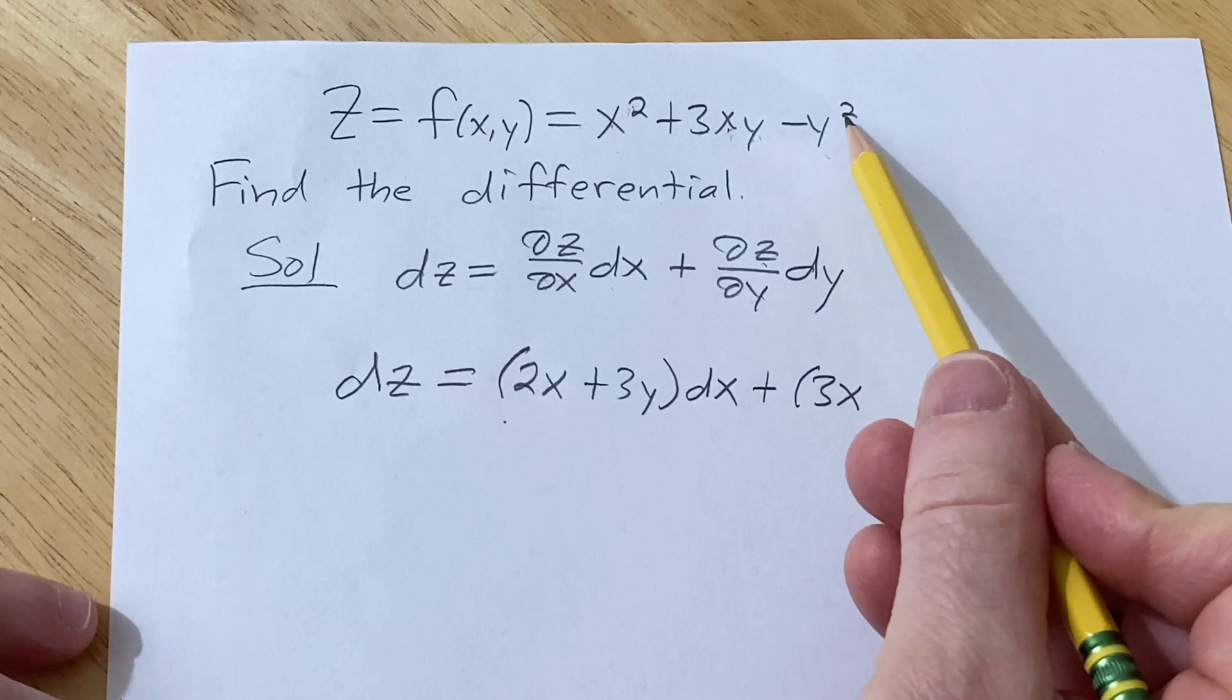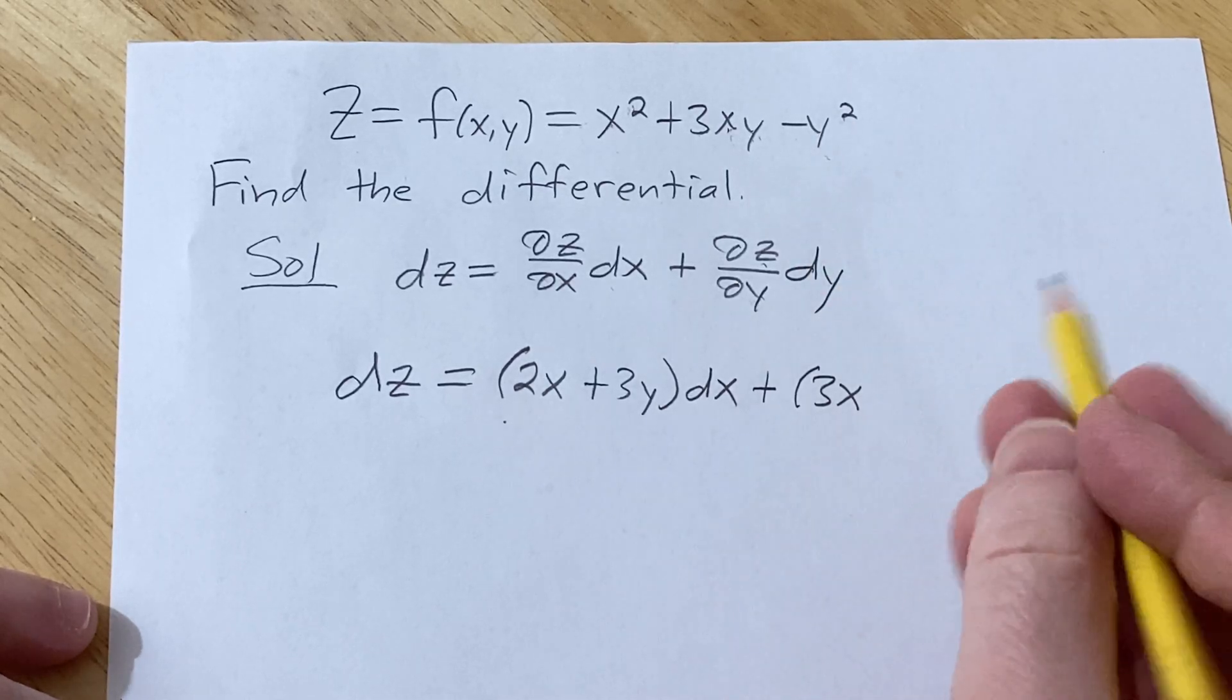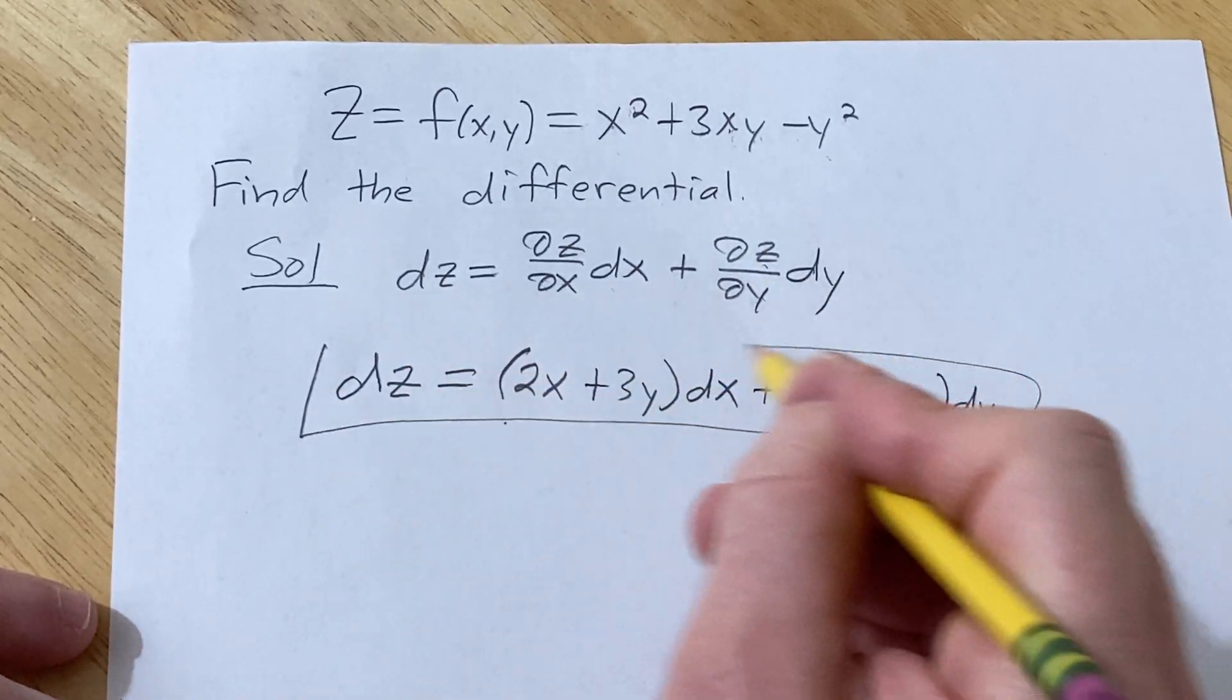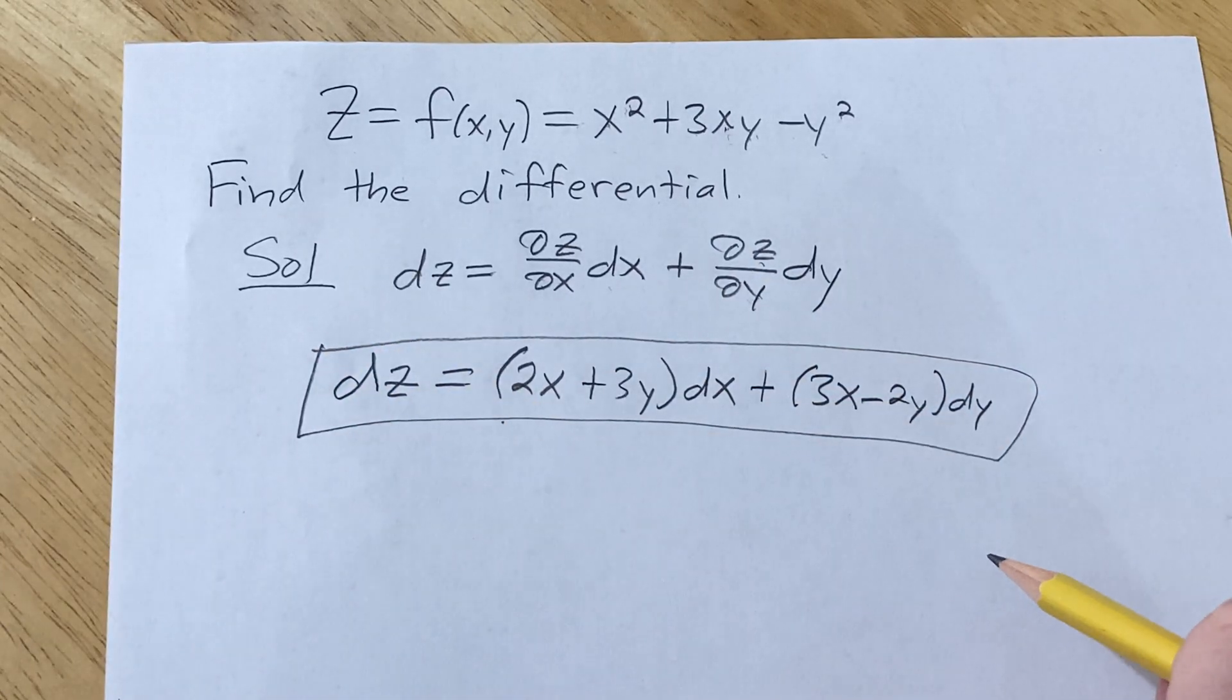And then here, the derivative is minus 2y from the power rule. And then we have dy. And that would be the differential of this function. Good luck.